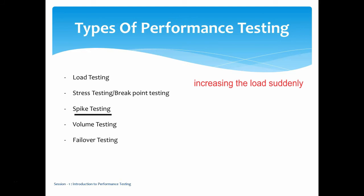Now let's look at spike testing. Spike testing is starting the application with a lower load and then suddenly increasing the load to double or triple. For example, if we are testing with a thousand users and suddenly increase to three thousand users, there is a sudden burden on the application. This is to see how the application behaves when load increases suddenly. Spike testing provides metrics on application capacity — whether it can handle a sudden surge — and is typically done to verify behavior during special situations of sudden load.